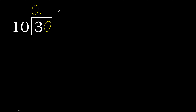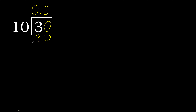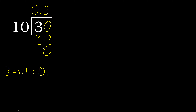Write the decimal point only once. 30 is not less than 10, so we proceed with 30. 10 multiplied by 3 is 30, subtract to get 0. There is no number that comes down, therefore we finish. So 3 divided by 10 equals 0.3.